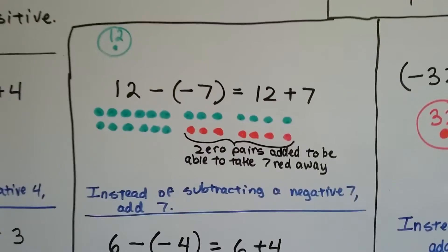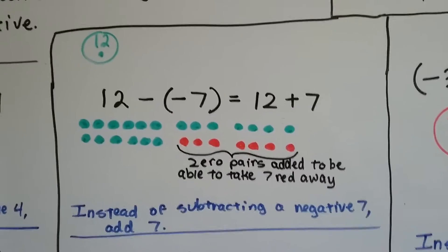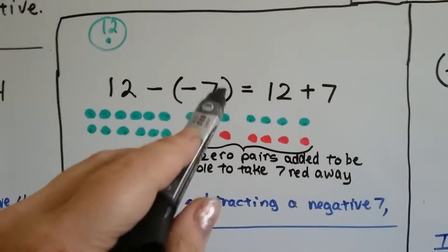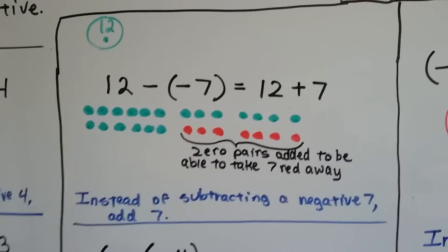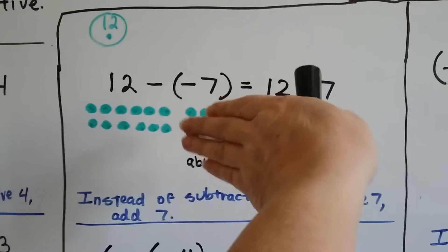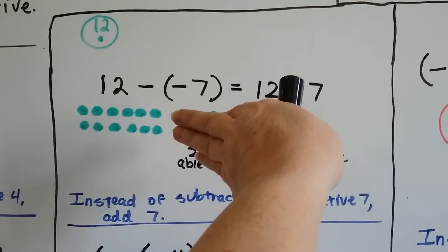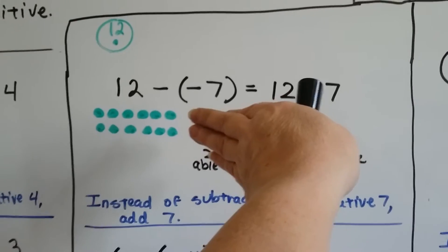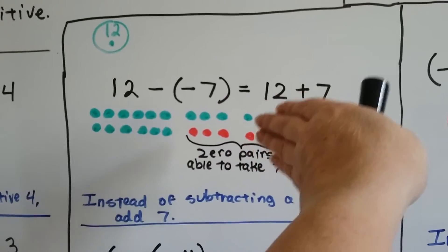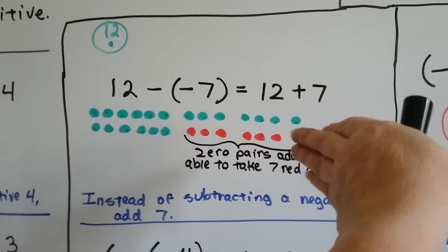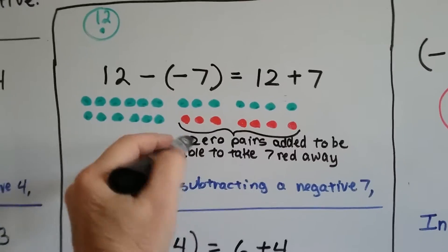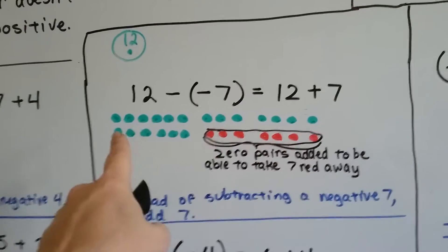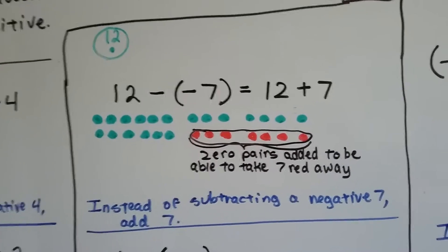Here's where I really want to show you with the chips what's going on. We've got positive 12 and we're taking away negative 7. The way we did it with zero chips: we had positive 12, and it said take away negative 7 — but we can't, we only have positive chips. So we added zero pairs until we did have negative 7 available to take away. That left 19 green ones.